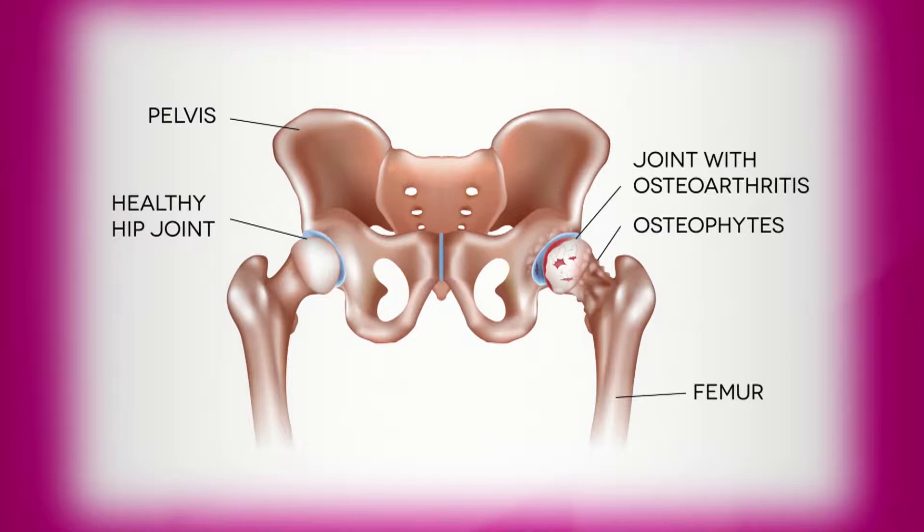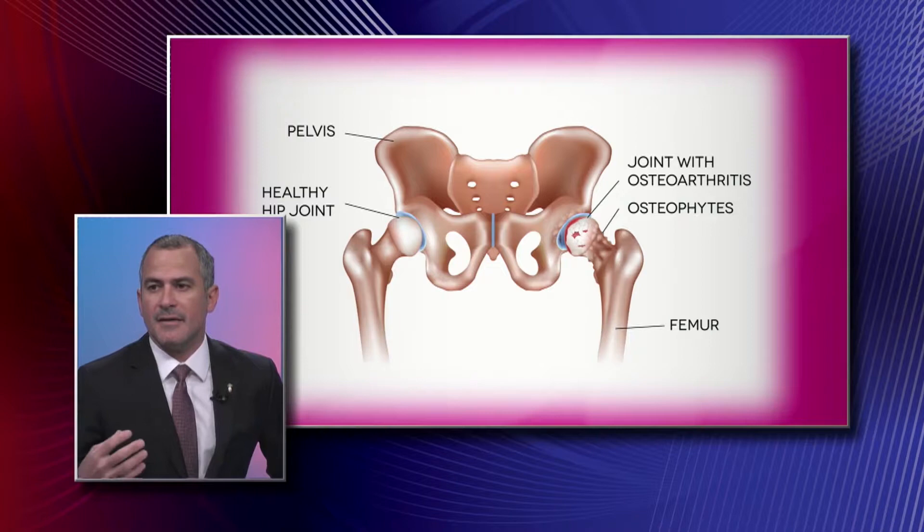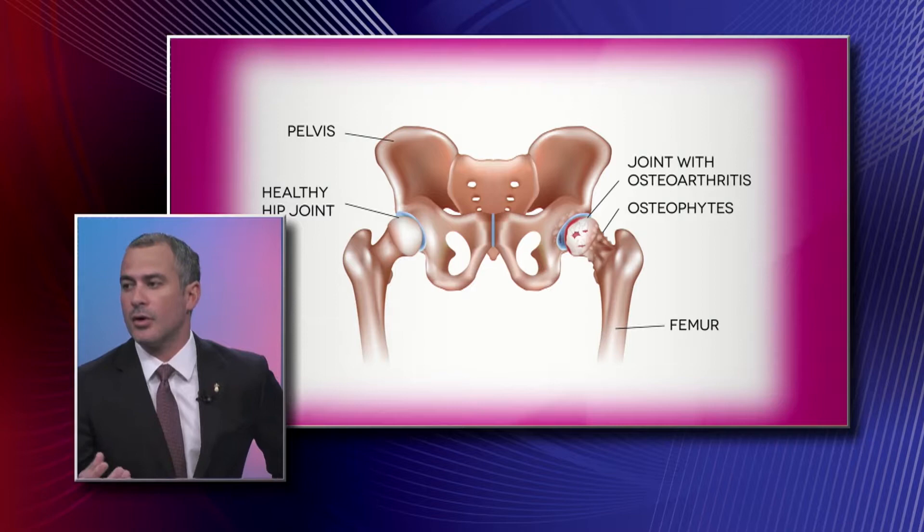We have a graphic of what a healthy hip compared to an arthritic hip looks like to help visualize. On the right there's a hip with osteoarthritis. What are osteophytes? When you start having arthritis and the joint degenerates, there are abnormal forces in the joints and the bone responds by forming bone — that's called an osteophyte, or a bone spur. That's a radiographic finding of arthritis.